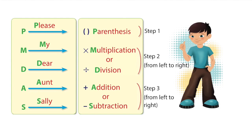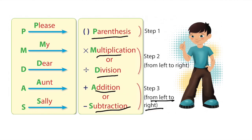We can also remember the rule like this: step one, parentheses; step two, multiplication or division; step three, addition or subtraction. If addition and subtraction are next to each other, we do whichever is on the left, going left to right. The same rule applies for multiplication and division — whichever comes first on the left, we do first.